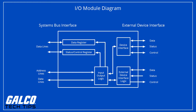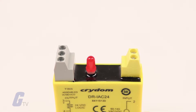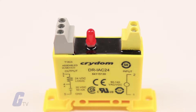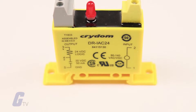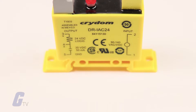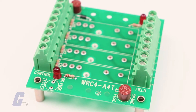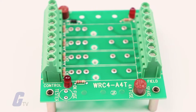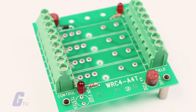I.O. modules are electrical components used for device communication, device control, and operation timing. They can connect directly to external loads like sensors, actuators, monitors, and valves to send and receive feedback to a control system when the load is energized.